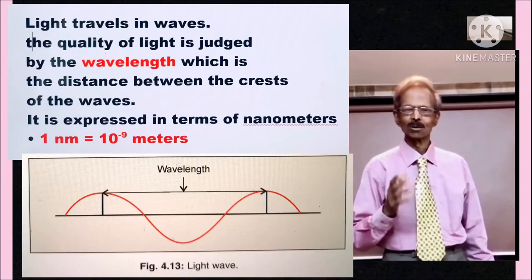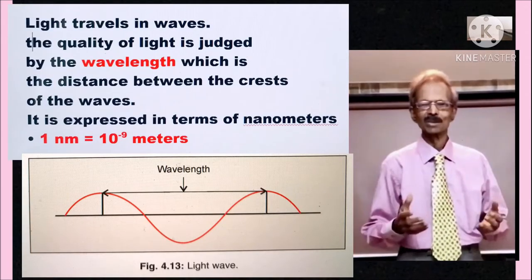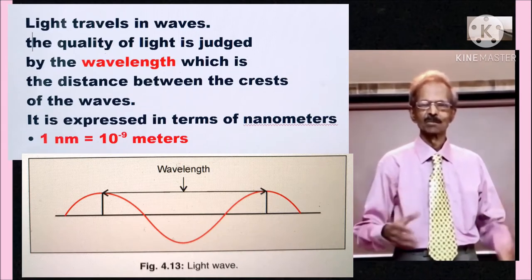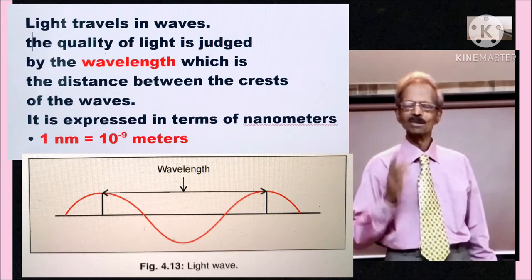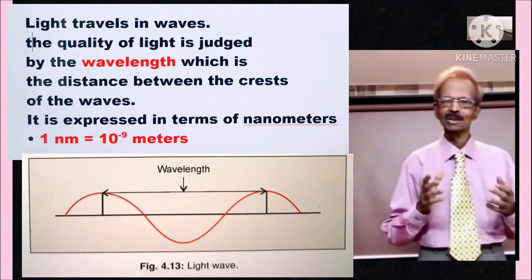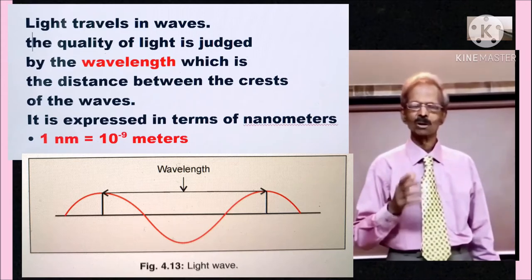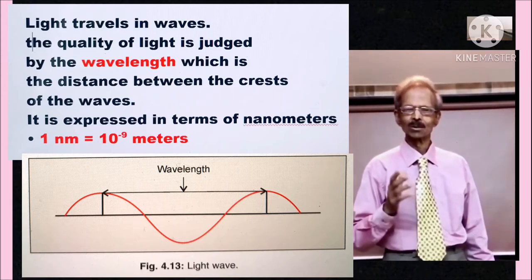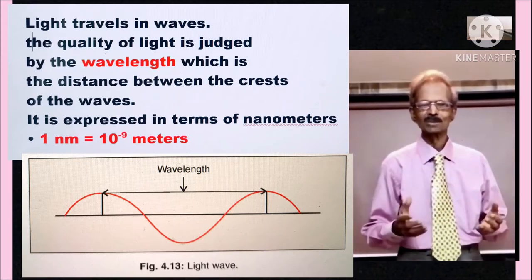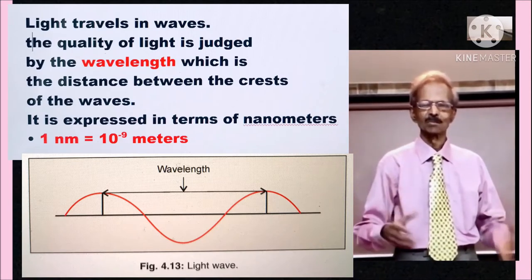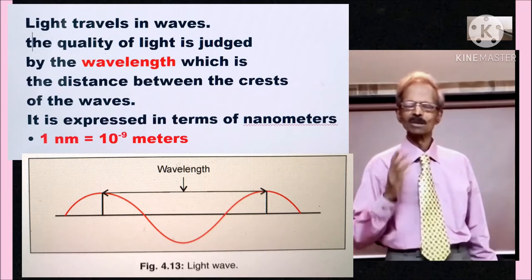Light travels in waves, and the quality of light is judged by wavelength. Wavelength is the distance between the crests of the waves and it is expressed in terms of nanometers. One nanometer is equal to 10 to the minus 9 meters.